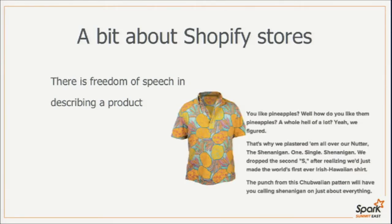The second thing was that we give people freedom of speech to describe products however they want. When you look at a picture, you obviously see a shirt — but when you look through the description, it says 'you like pineapples? Well, how you like them? A whole hell of a lot.' It's only at the end of the second paragraph that you see the word 'shirt.' So just reading the description and getting word frequency is not going to be very useful — I'd get six or seven hits for 'pineapple' and one for 'shirt,' so the shirt gets automatically filtered out.